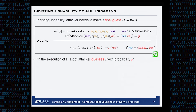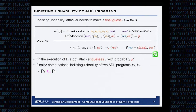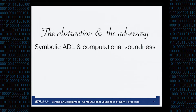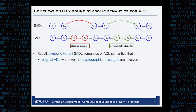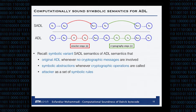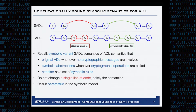With all these notions at hand, we can canonically define computational indistinguishability. The symbolic Dalvik, our symbolic variant, needs to satisfy the following conditions: original Dalvik whenever no crypto is involved, symbolic abstraction if crypto is involved, the attacker as a set of symbolic rules, no changes to any line of code — only the semantics — and it should be parametric in the symbolic model and computationally sound.